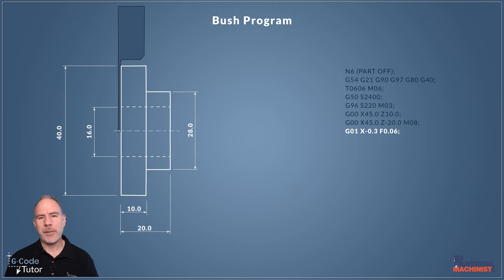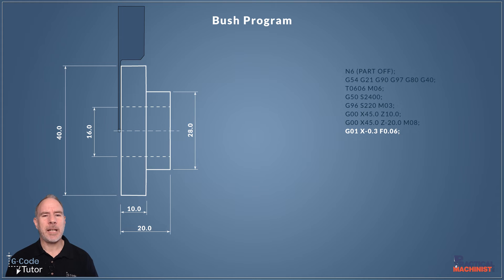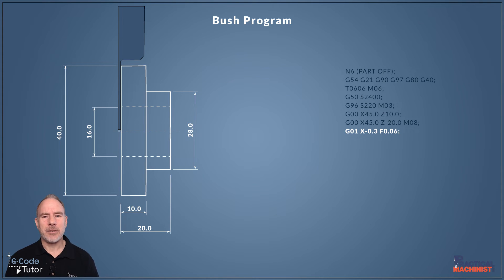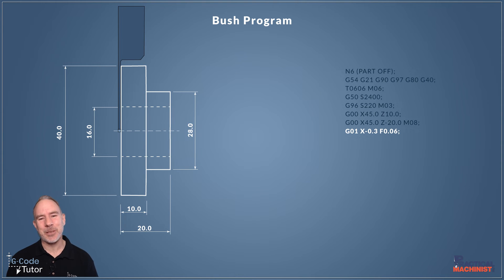I've gone down to X0.3, just past the center line to remove any pips. Because this part has a bore in it, we don't necessarily need to go right to the center line — we could stop at 15.5 millimeters and the part will leave the stock material once we reach the bore. But I've come right down to clean that face up a little bit, so there's less work when our facing tool comes in on the first op for the next part. I've added a feed rate of F0.6 — nice and steady to part off. Parting off often takes a lot of feel, and we may need to play around with feed rates depending on the tip grade and material.